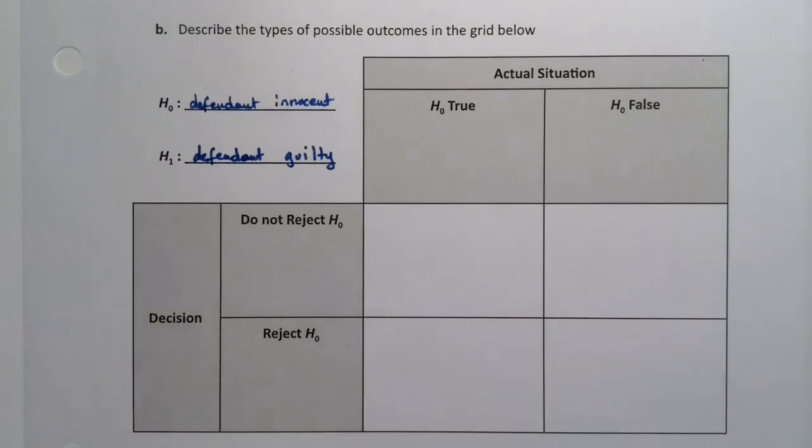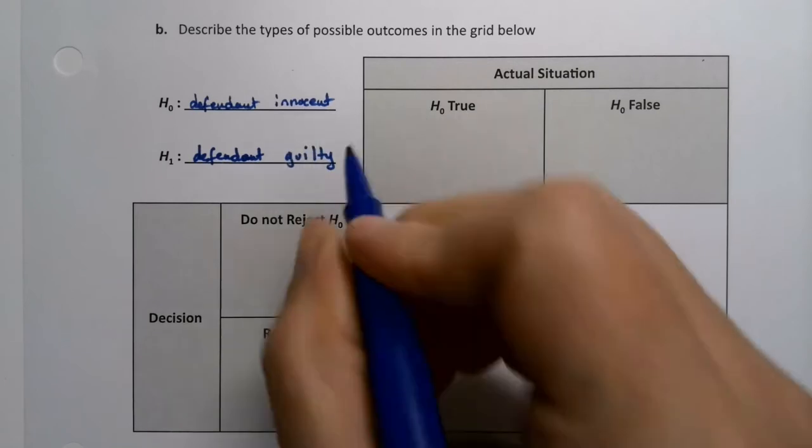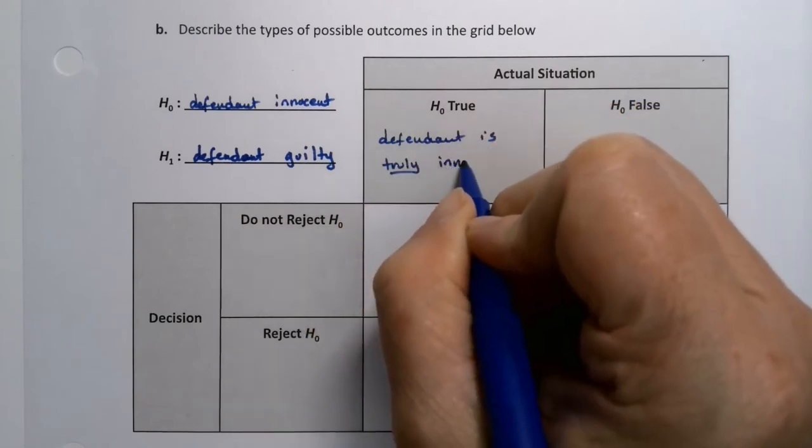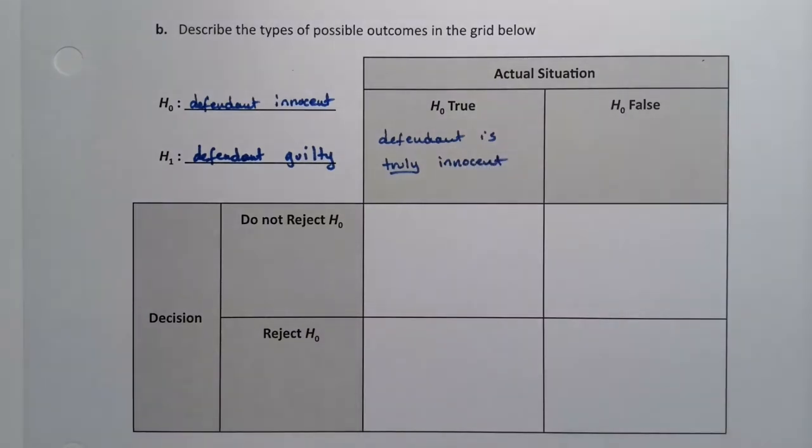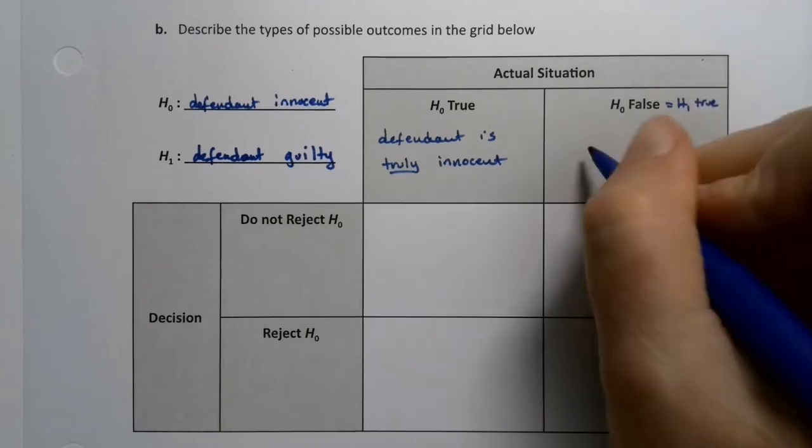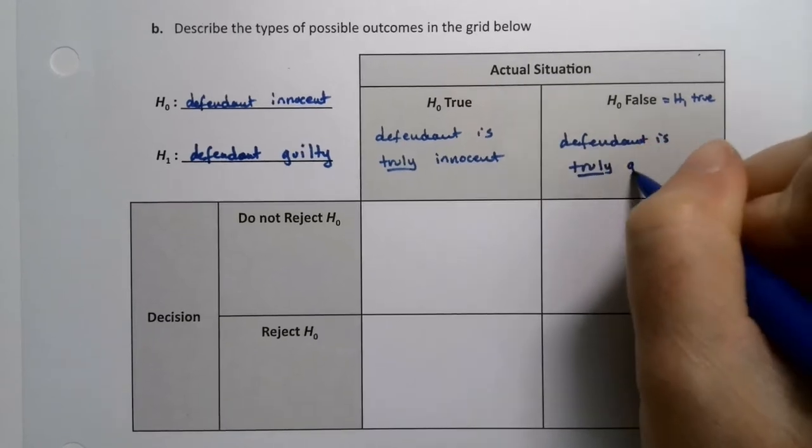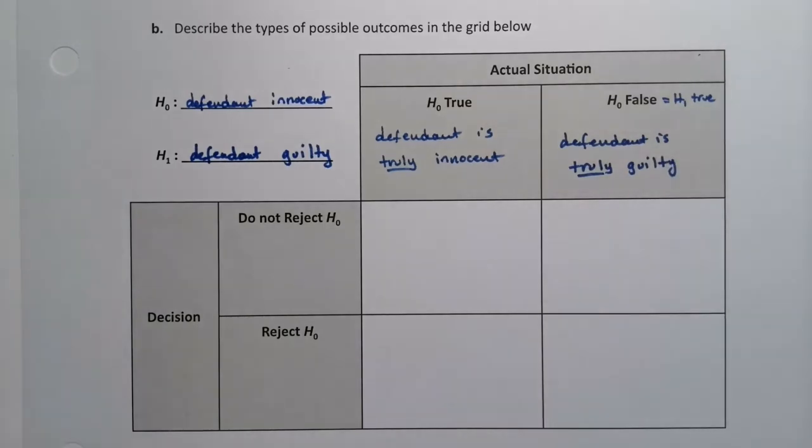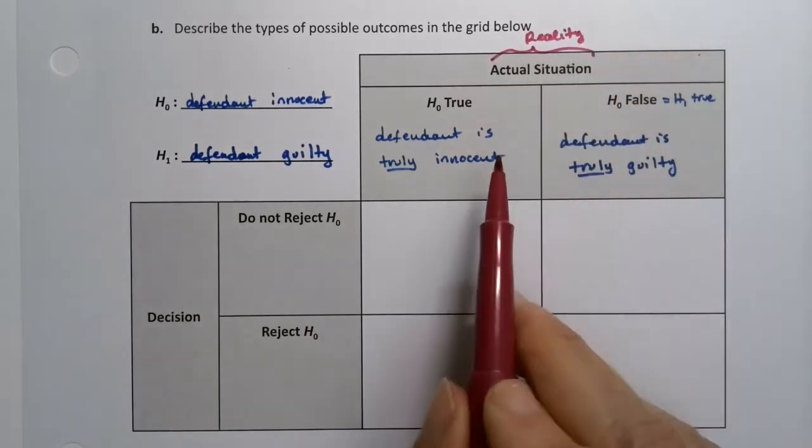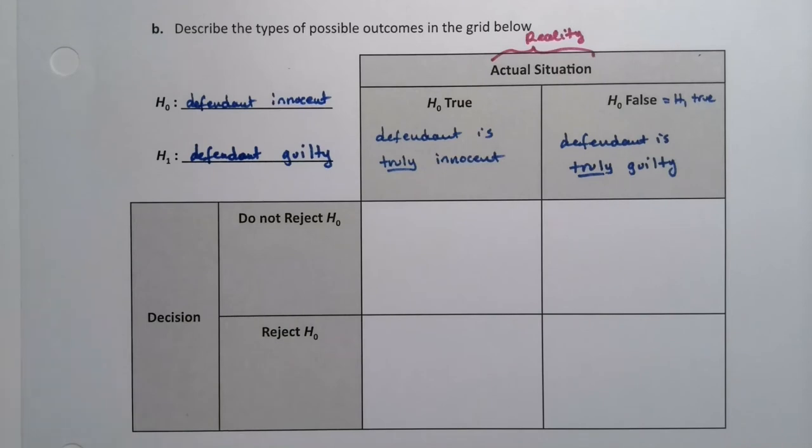Let's start with the reality. Real life, actual situation. What could be going on? So up here, if the null hypothesis is true, that means the defendant is truly innocent. Did not do whatever crime this is. If the null hypothesis is false, that means that the alternative is true. And that would mean that the defendant is truly guilty. And I think I'll usually write actual situation right here, but I could sometimes write reality. That's what's going on. So this is reality up here. Now we don't really know what these are. Reality, you don't get to know these things because you're not there. You're not all knowing and all powerful. You're not omniscient. But those are the two possibilities.